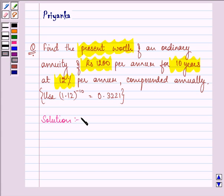So here we are given R, that is the periodic payment towards this ordinary annuity, as rupees 1200.